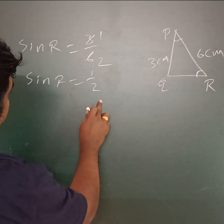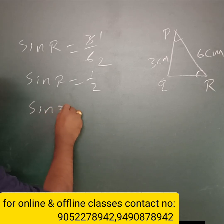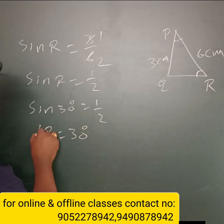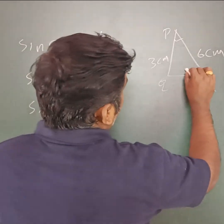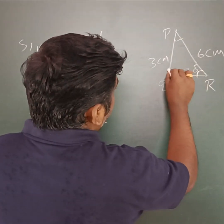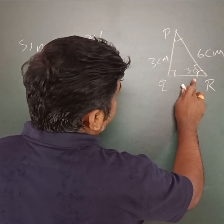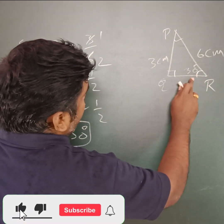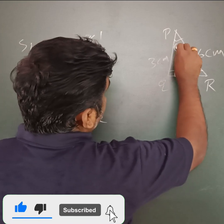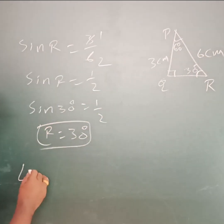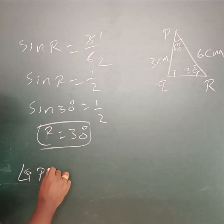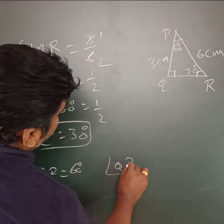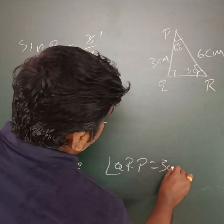Sin R equal to 1 by 2. Since sin 30 equal to 1 by 2, R equals 30 degrees. Q is 90 degrees, so the sum of P and R equals 90 degrees. Therefore angle QPR equals 60 degrees and angle QRP equals 30 degrees.